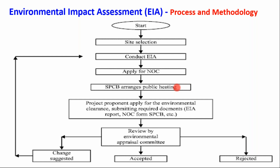The public hearing addresses what impacts may occur on the public, residential areas, and the soil, air, and water nearby that particular site. This can be communicated by the public to the State Pollution Control Board officers. After the public hearing, if the public does not object to any impacts, operations, or processes involved under that project, then the project proponent applies for Environmental Clearance (EC) and submits required documents including the EIA report, NOC, and SPCB documents.